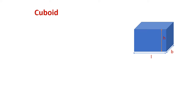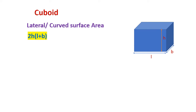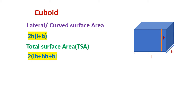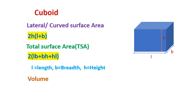Cuboid: curved surface area 2h into l plus b, total surface area 2 into lb plus bh plus hl, where l is length, b is breadth, h is height, volume l into b into h.